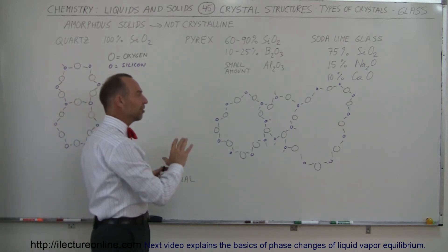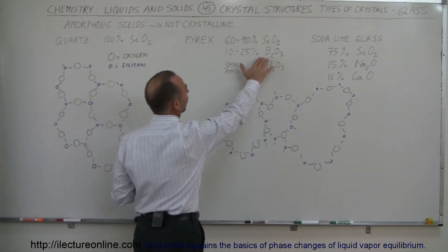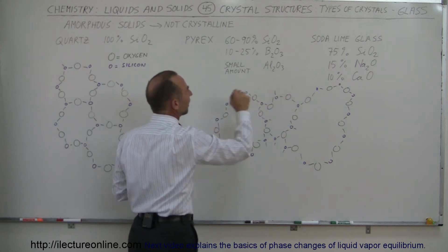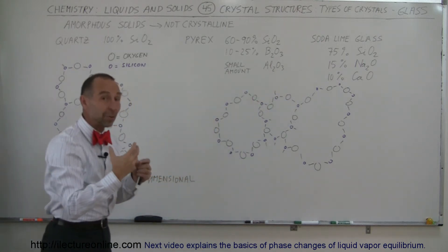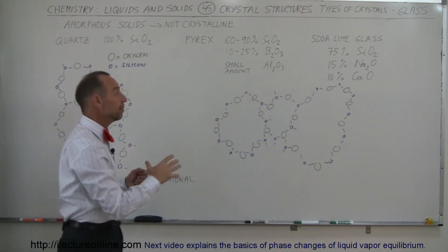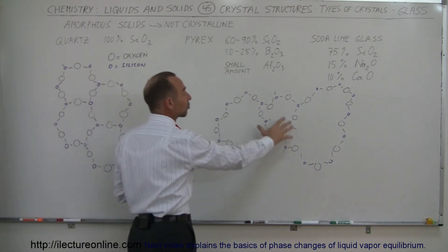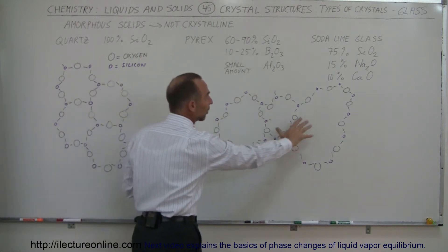But the difference there is, since we mix other substances with it, such as boron oxide or aluminum oxide, it gives it different properties, the ones that we want, but it causes it not to be as crystalline structured as before, so you see that there's variation in the shapes,